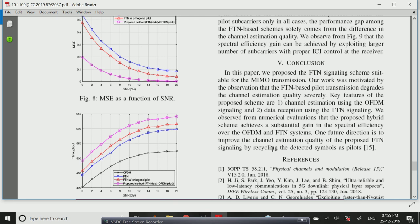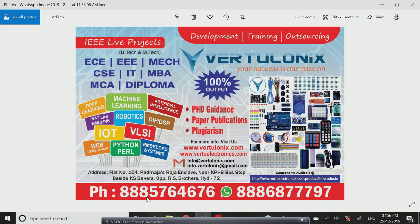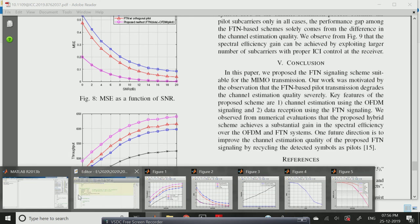If you have any information about this topic, you can contact 888-576-4676, that is my contact number, and another WhatsApp number 888-777-97. If you have any queries about this project, please contact me. Our visiting website is www.virtualonics.com. We are supporting PhD guidance and paper publication and plagiarism. Paper publication includes UGC care list and Scopus, Springer and IEEE and SCI journals also. For plagiarism we have two softwares: one is Turnitin software and another one is Drillbit.